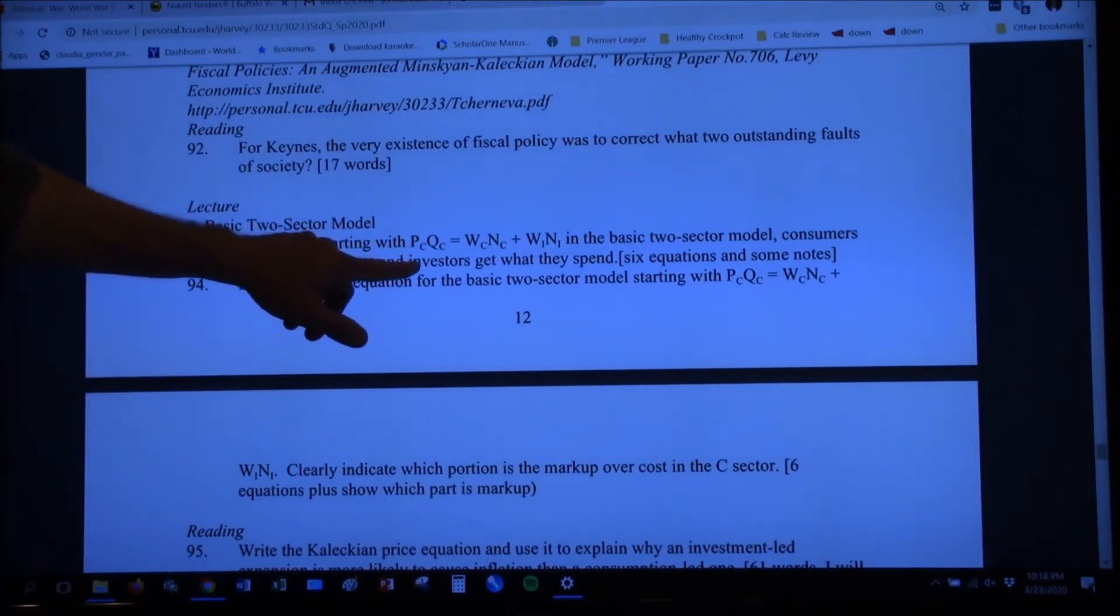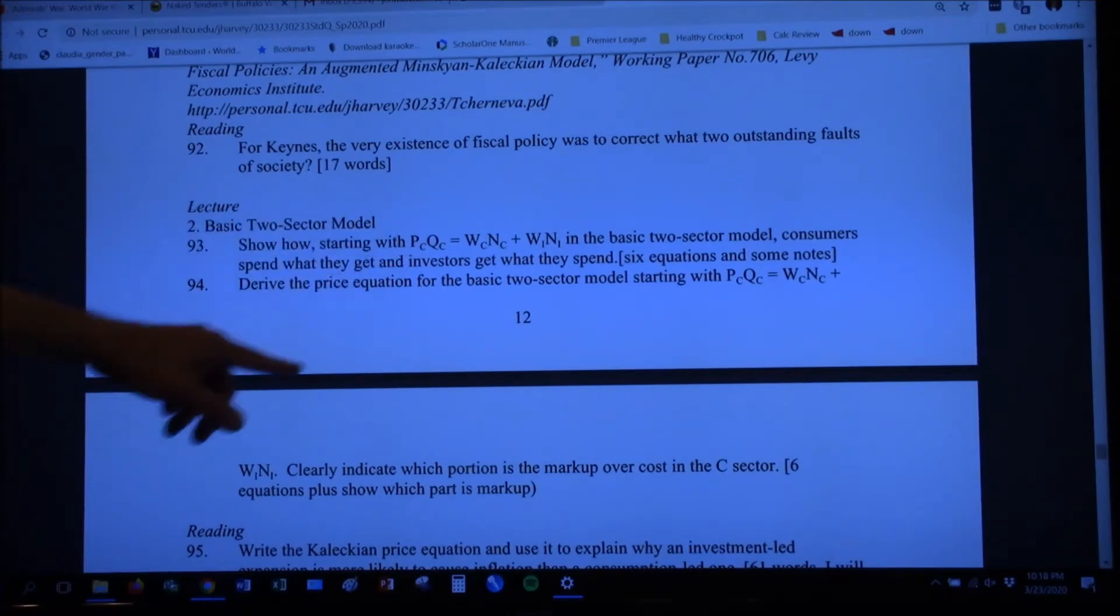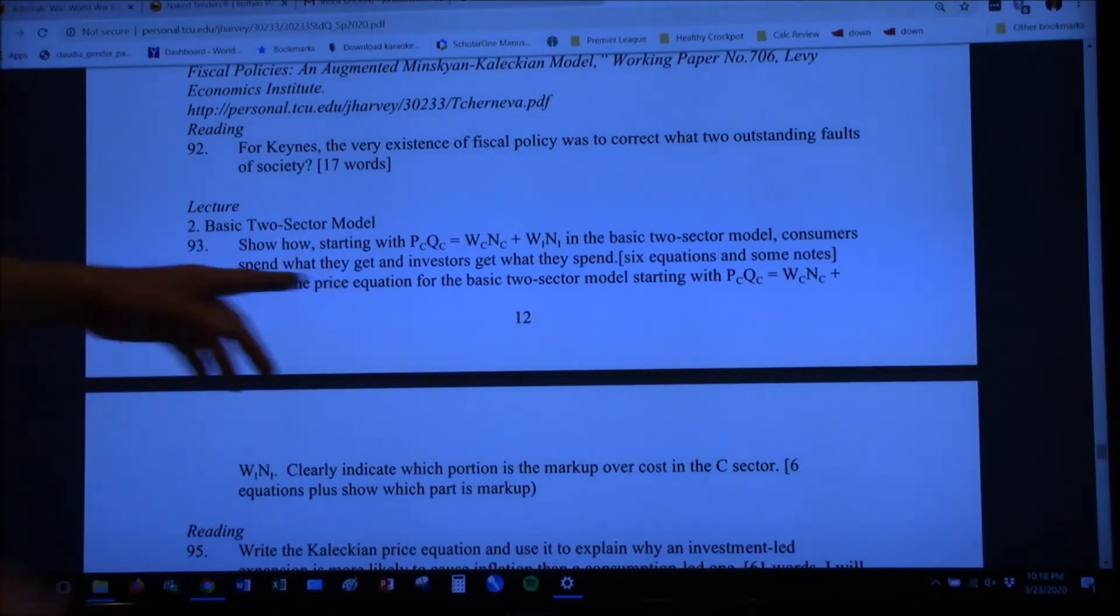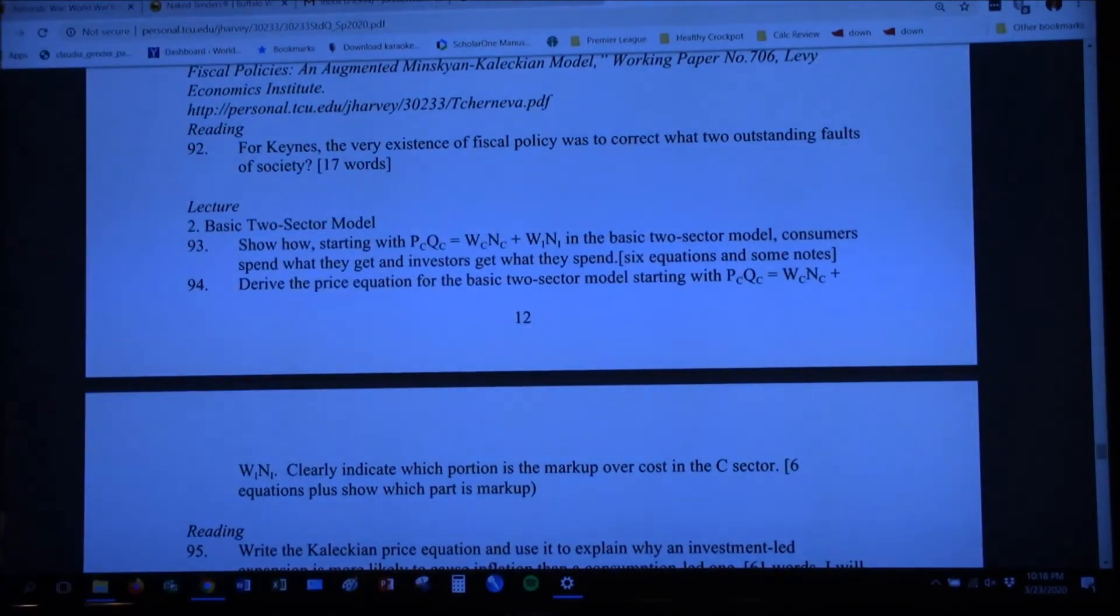We've already got PC in here, right? That is the price level for consumer goods. That is the consumer price index, right? So 94 says, derive the price equation for the basic two-sector model beginning with, again, that same equation. PCQC equals WCNC plus WINI.